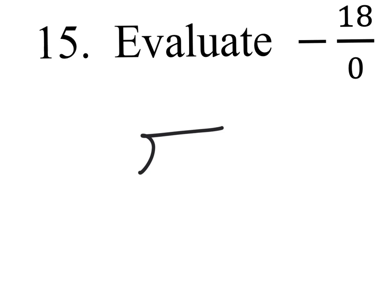So when I write this out, I have one negative, so I know my answer is going to be negative. And I have 18 divided by 0.